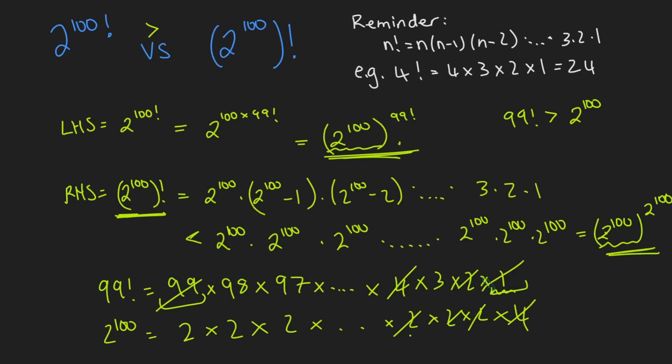So get rid of those and get rid of those. And now I'm left with 95 numbers on the top, 95 numbers on the bottom. All 95 on the top are bigger than all 95 on the bottom. And so therefore 99 factorial is way bigger than 2 to the 100, meaning that this number here is way bigger than this number here, solving our problem.